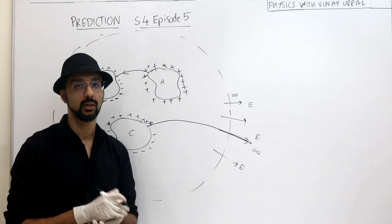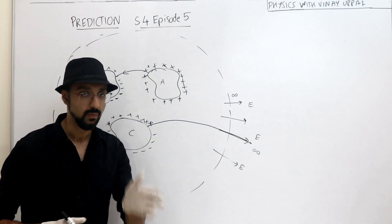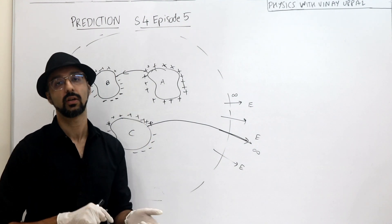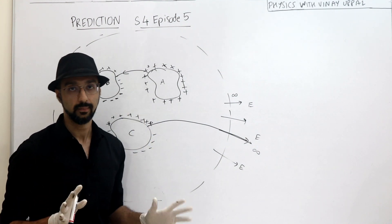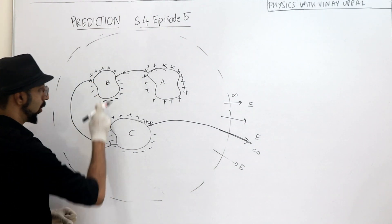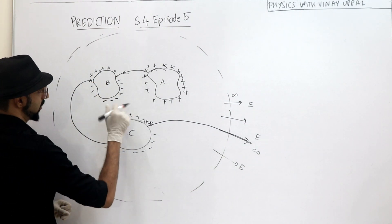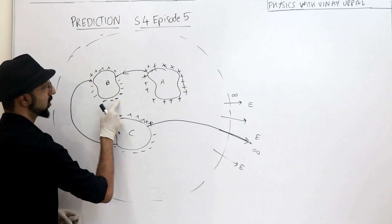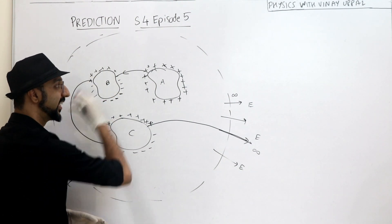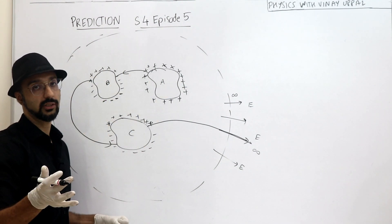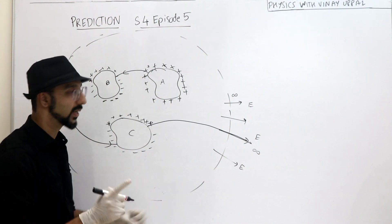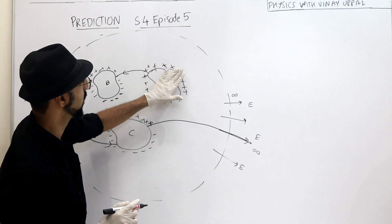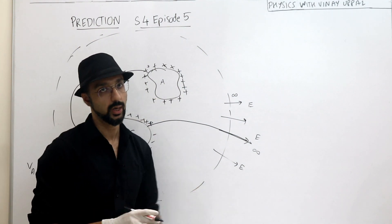So conductor A needs to have completely positive surface charge density — it cannot have negative surface charge density. The answer to the question is: it is not possible. All three conductors cannot have both positive and negative surface charge density. At least one conductor will have positive surface charge density all over its surface.